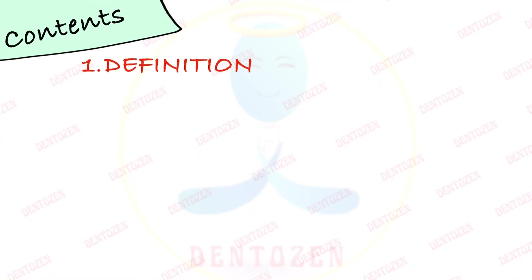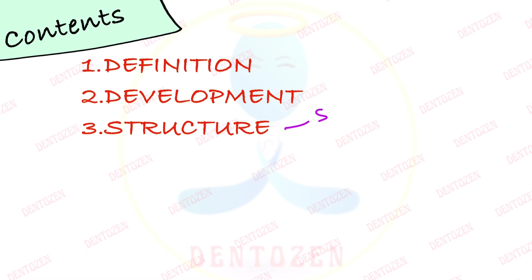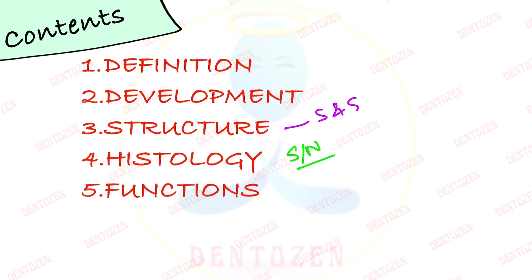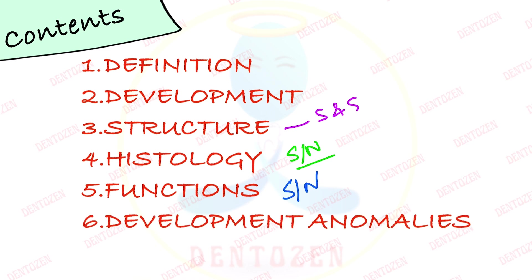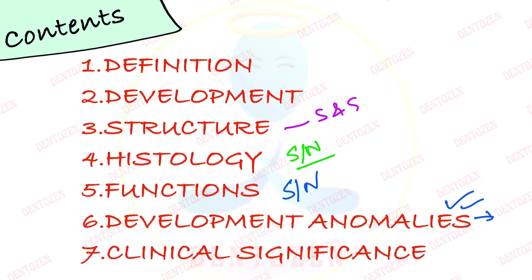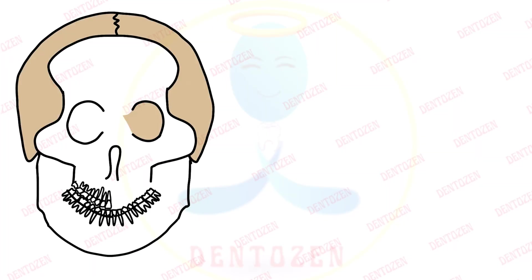We are going to talk about its definition, its development, its structure — that is size and shape. Then its histology, which can be an important short note on how it appears under the microscope. Then functions, which can be another important short note. And then the developmental anomalies — what can go wrong with its development. And then, very very important, its clinical significance for us dentists — why it is so important.